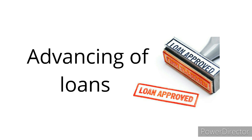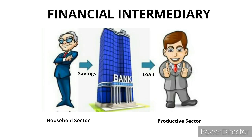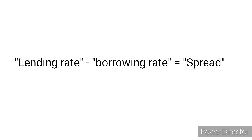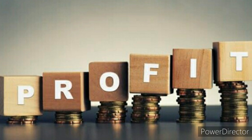The second primary function of commercial banks is advancing loans. Whatever is deposited in the bank, the bank keeps some cash reserves and uses the remaining money to grant loans to needy borrowers, charging interest on those loans. Commercial banks act as financial intermediaries — they collect savings from the household sector and lend to the productive sector. The rate at which banks accept deposits is the borrowing rate, and the rate at which they lend is the lending rate. The difference between them is the spread, which is the profit earned by commercial banks.